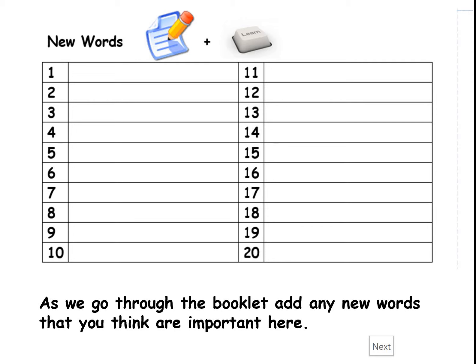But as an example, at the end of this lesson I might think that the word 'alkali' is important, so I'd put it here at the front to help me find it as reference and to practise spelling. I may also think that the word 'indicator' is important, so I'd select it and put it here. After each lesson, make sure you go back through and select any keywords you want to put here going forward.